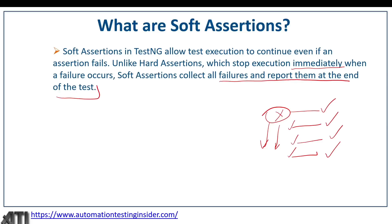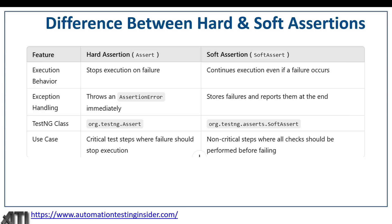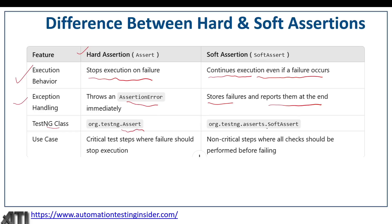We have an assertAll function that we need to call at the end of the script. Regarding the difference between hard and soft assertions: execution behavior — hard assertion stops execution on failure, soft assertion continues execution even if a failure occurs. For exception handling — hard assertion throws an assertion error immediately, soft assertion stores failures and reports them at the end. The class used for hard assertion is the Assert class, and for soft assertions it's SoftAssert.